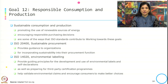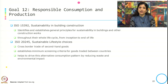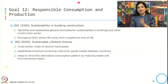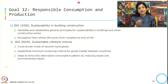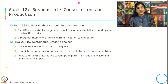A few more relevant standards for Goal 12: ISO 15392 on sustainability in construction identifies and establishes the general principles of sustainability in building and other construction work throughout their whole life cycle, from inception to end of life. ISO 20245 on sustainable lifestyle choices deals with the cross-border trade of second-hand goods, establishes minimum screening criteria for goods traded between countries, and helps drive alternative consumption patterns by reducing waste and environmental impact.